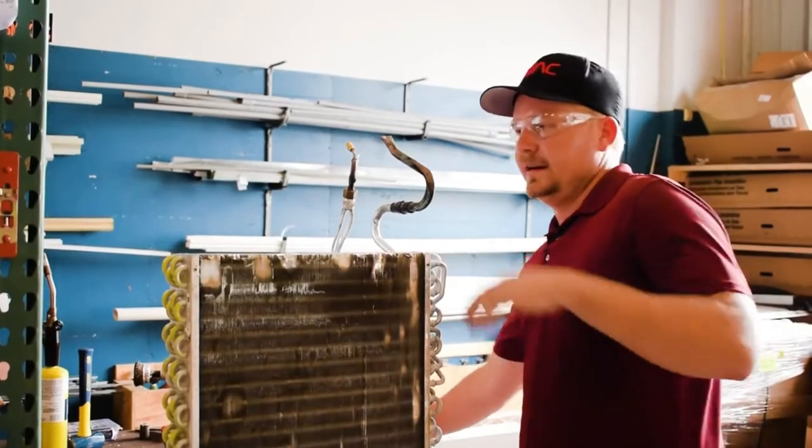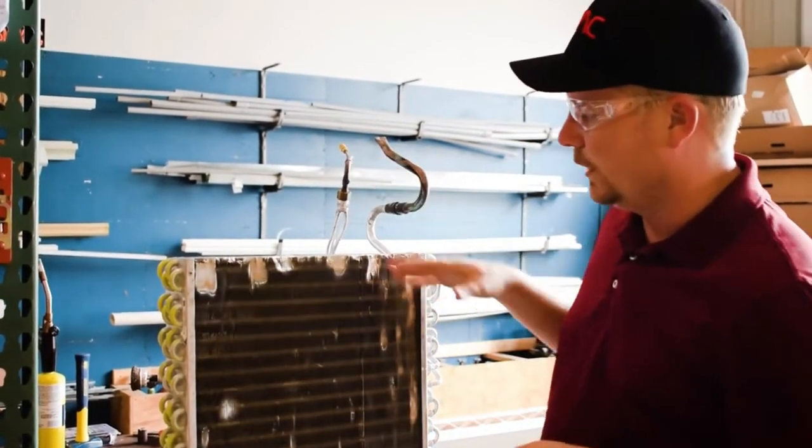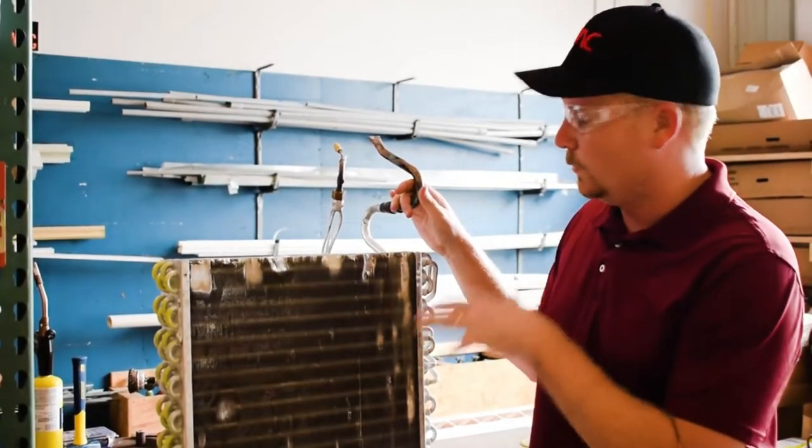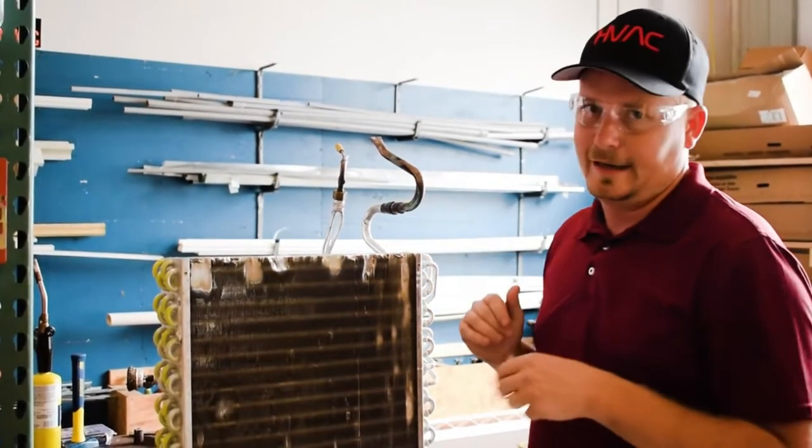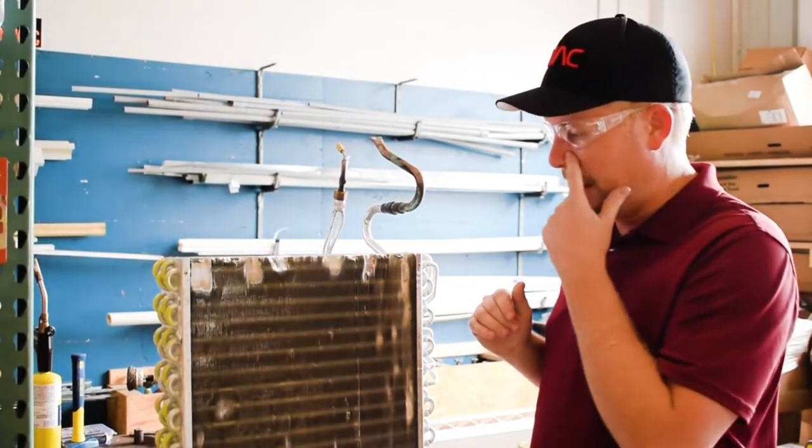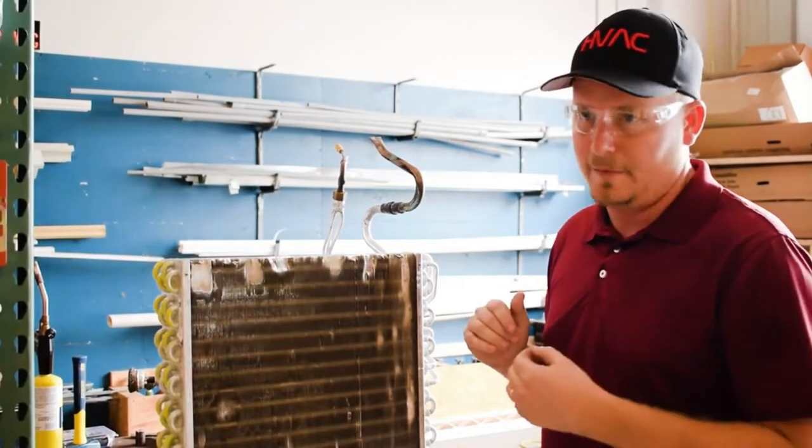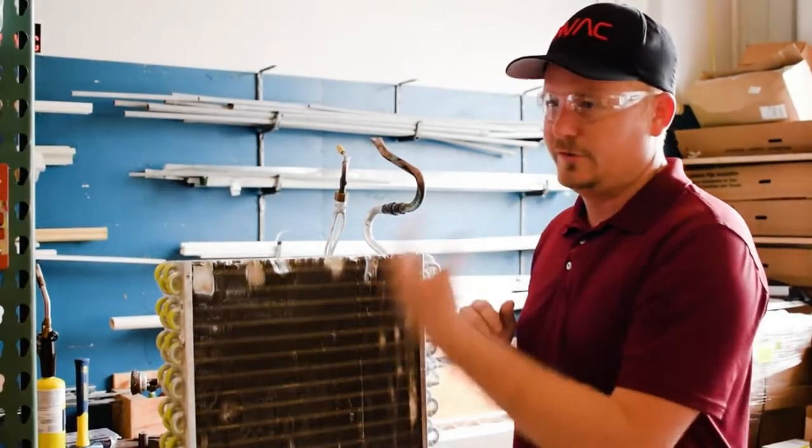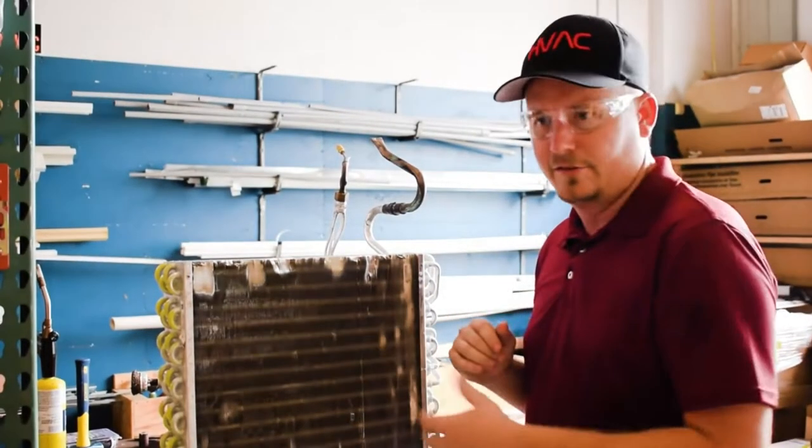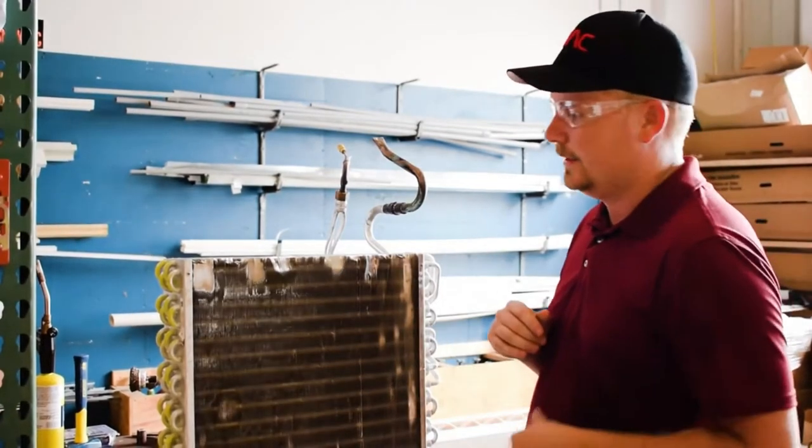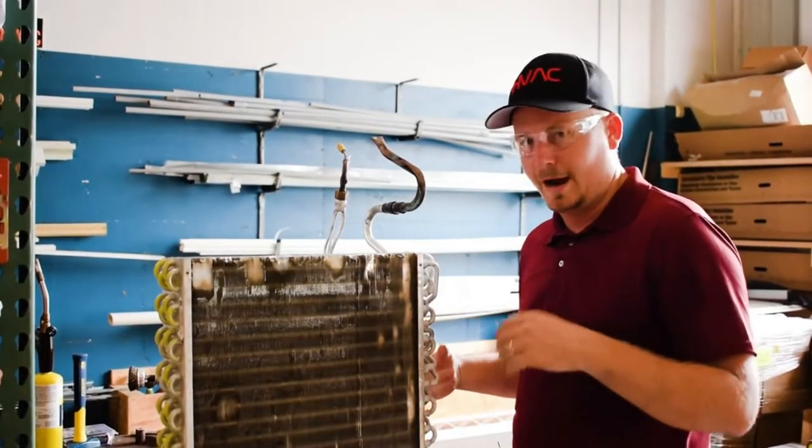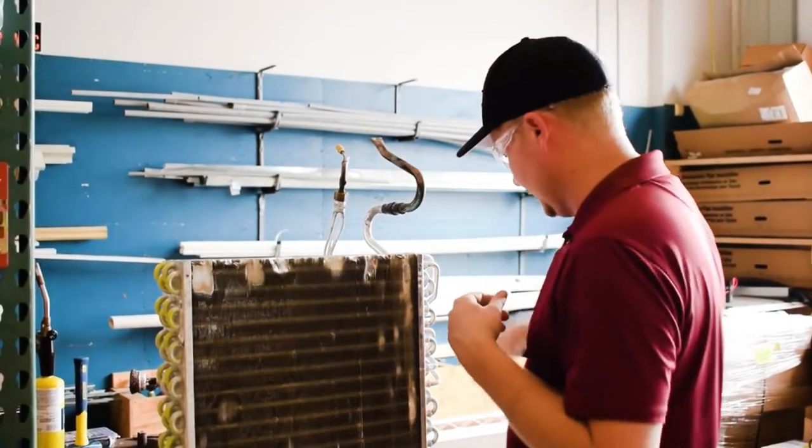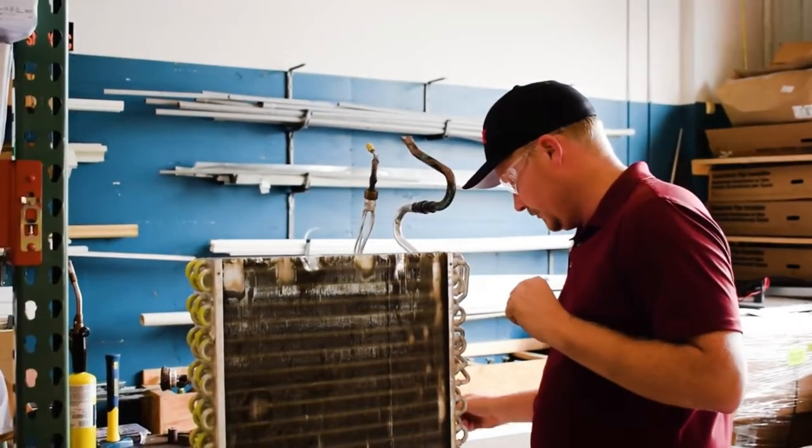First, we need to flow nitrogen through this coil to keep carbon from building up when brazing. With alloy saw, you're probably not going to get hot enough to build up carbon, but I still like to do it as a habit because it helps displace anything from coming into the system and makes it less likely you get contaminants. It's just good practice. But first I need to cut this off so I can actually flow through because you can't pressurize with nitrogen.